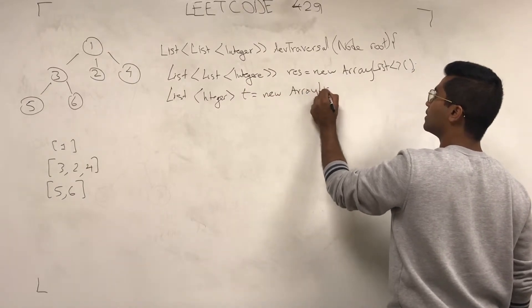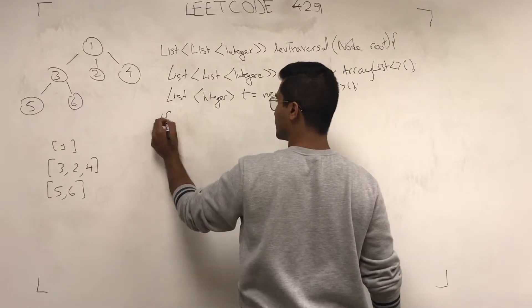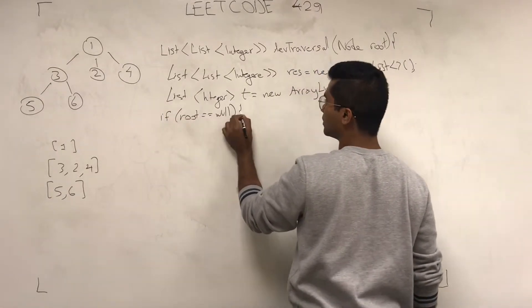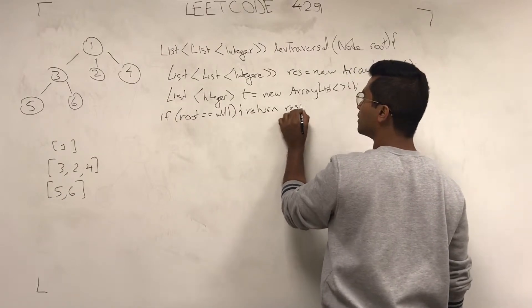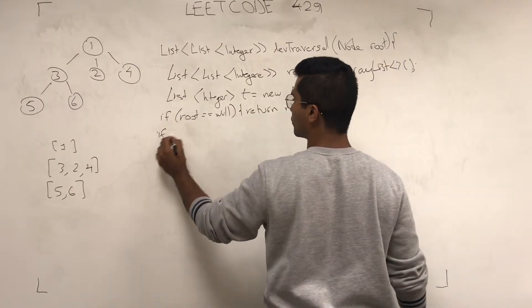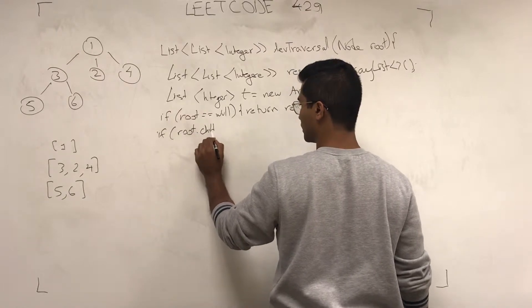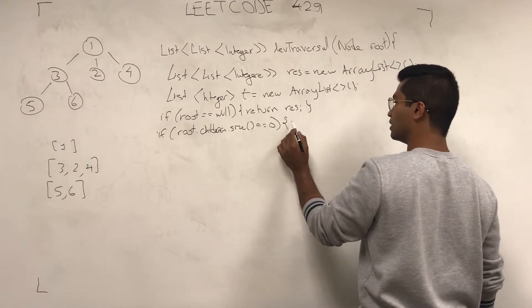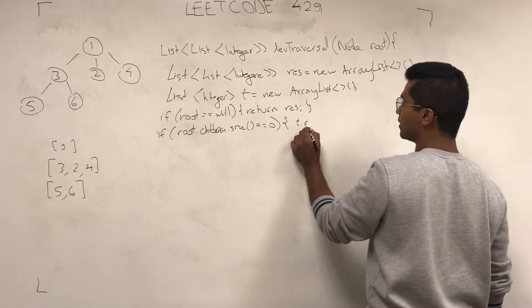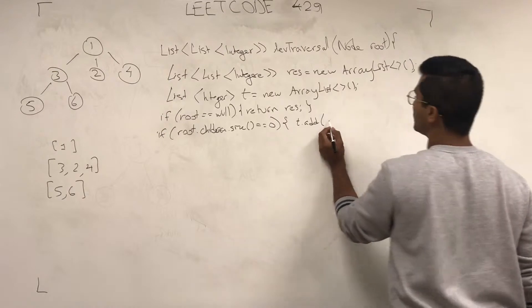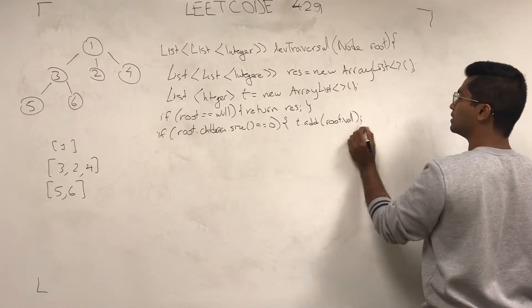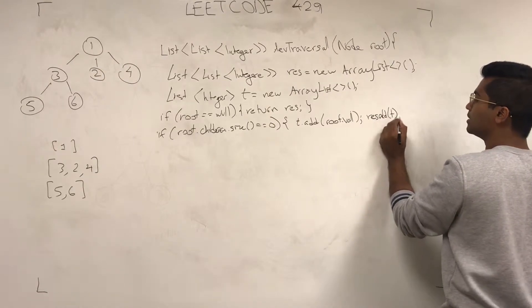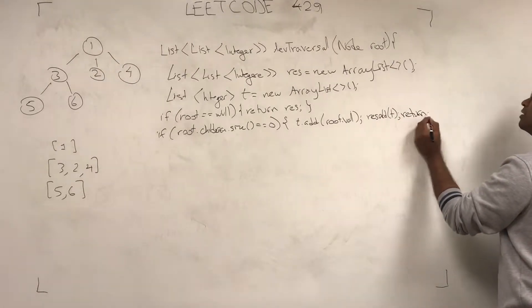And we just have to do some base cases. If root is null, return res. Otherwise, if root.children.size is 0, we add t.add(root.val) and we add that res.add(t) and we return res.